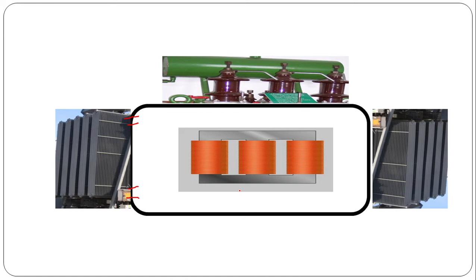So in transformer, heat is transferred from core and windings to the transformer oil using the convection method of heat transfer. Why convection method? Because here the heat is transferred by using a liquid, that is transformer oil. That's why this method of heat transfer is called convection.